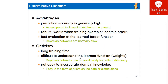The next is the discriminative classifier. The advantages of discriminative classifiers are: prediction accuracy is generally high compared to Bayesian methods. It is also robust — it works when training examples contain errors. And there is fast evaluation of the network's learned target function, whereas Bayesian networks are normally slow.